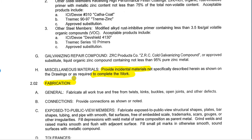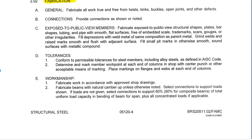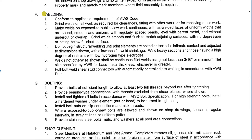Next we get into fabrication, which tells us exactly how to put things together. Where the specifications are silent, the AISC code of standard practice comes into play. Looking at fabrication, it talks about tolerances, and in this particular case, how to treat steel that's in public view, workmanship, and things like that. It also covers how the contractor is supposed to do welding, bolting, and shop cleaning. It's really important to read through this carefully to make sure there's nothing more detailed than what you'd get in standard practice, because that could end up affecting cost and schedule.